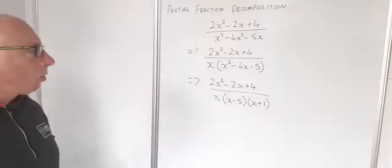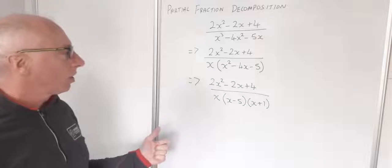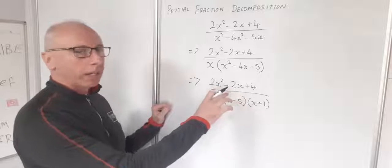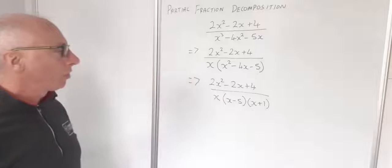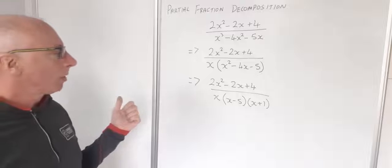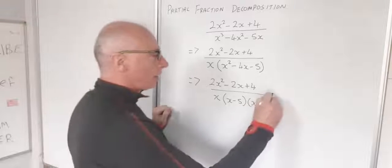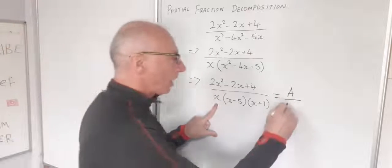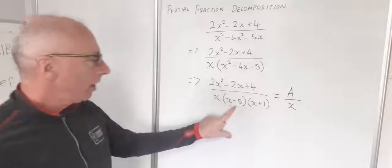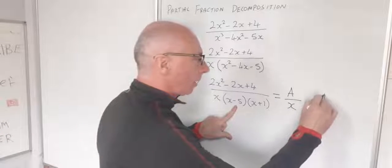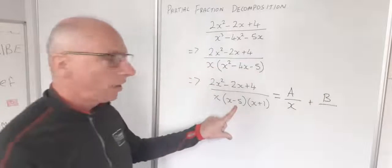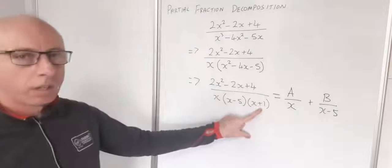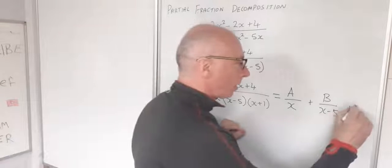This is now in the format I want for partial fraction decomposition. So my setup is: a constant A over x, plus a constant B over x minus 5, plus a constant C over x plus 1.